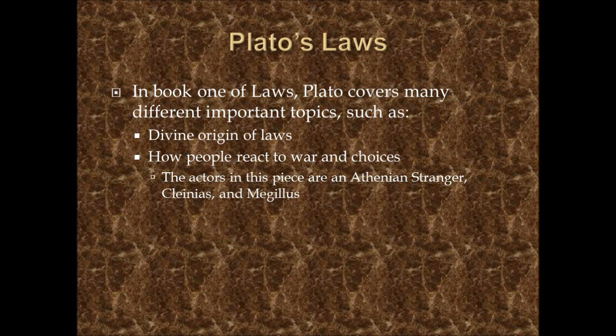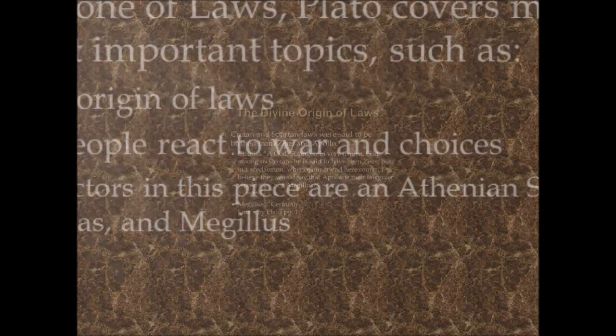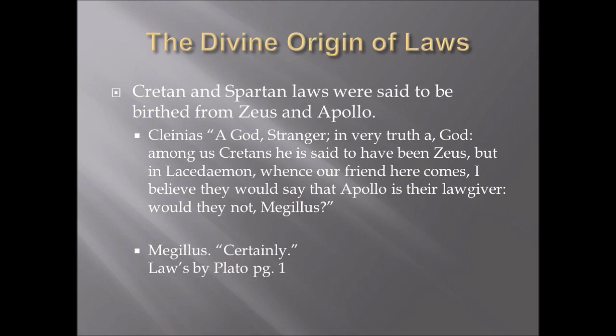In book one of the Laws, Plato covers many different topics, such as the divine origin of laws and how people react to war and different choices. Cretan and Spartan laws were said to have been created by Zeus and Apollo themselves. Plato conveys his thoughts about divine origin through dialogue with Selenius and Megillus: Selenius says that where he is from, Zeus created legislation, whereas Megillus says Apollo created their legislation. This shows that Plato's theory of divine origin is apparent in his book of Laws.